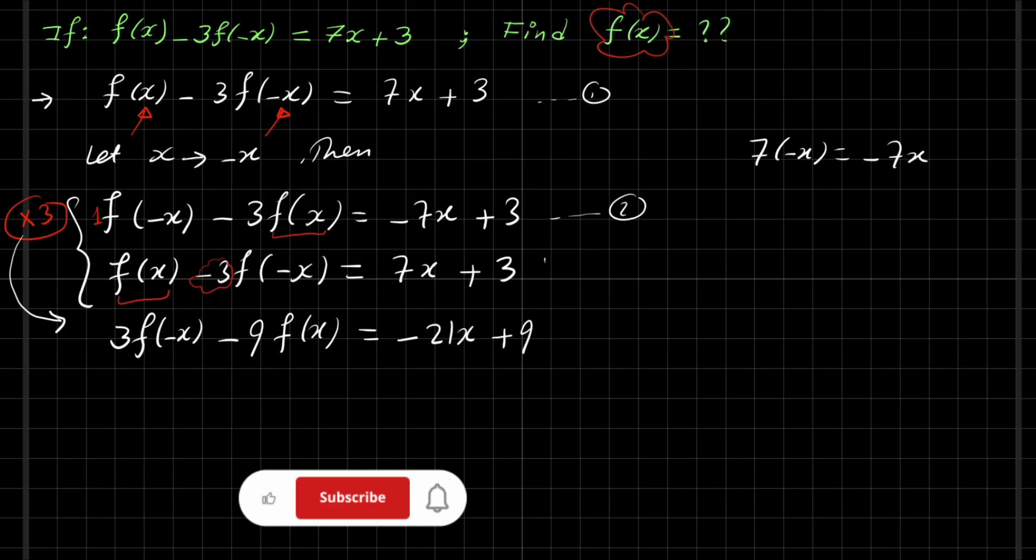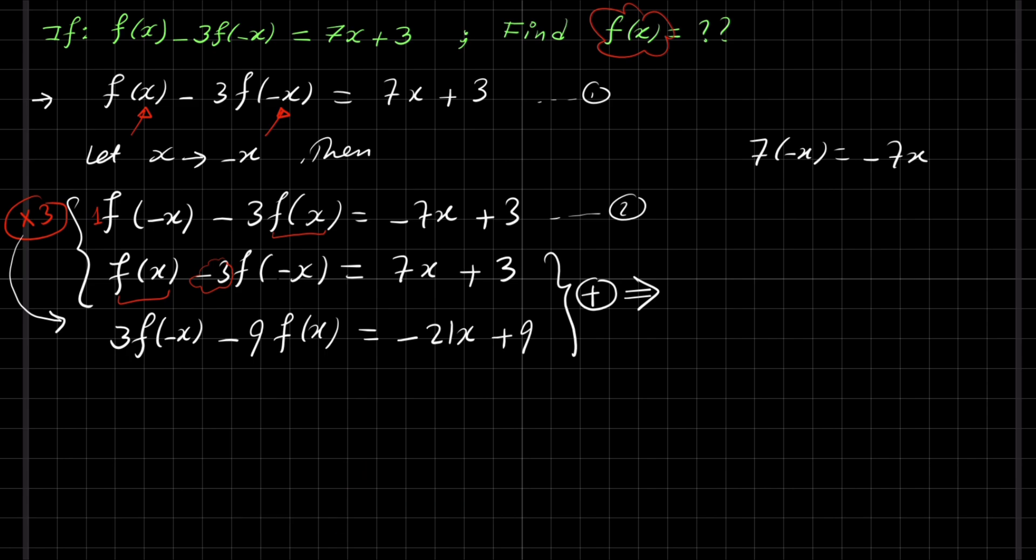And now we have to add these two equations. Adding these two equations, we'll get for f of minus x, this is minus 3 f of minus x and 3 f of minus x added up to 0. And here we have 1 f of x. So we have 1 f of x and minus 9, so we get minus 8 f of x.